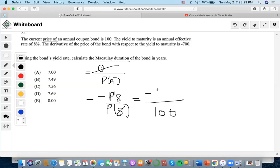The yield to maturity is an annual effective rate of 8% and the derivative of the price of the bond with respect to the yield to maturity is negative 700. Since the derivative of the price is negative 700, we're going to input 700 here. This negative 700 is with respect to the yield to maturity, which is a rate of 8%.